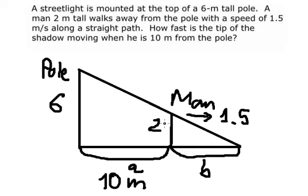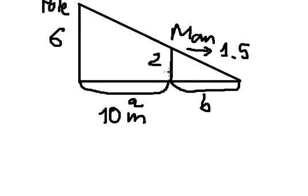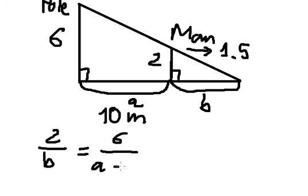So we have the ratio here. We can use the ratio of the triangles. So we have 2 over b equals 6 over a plus b.